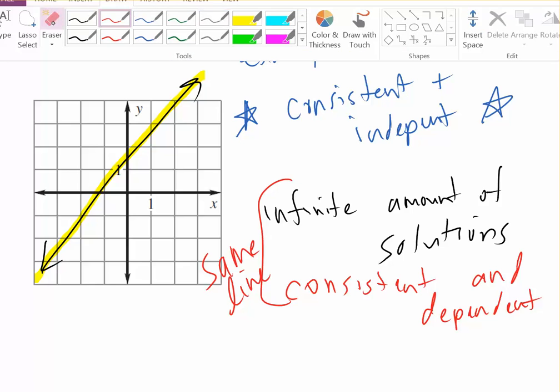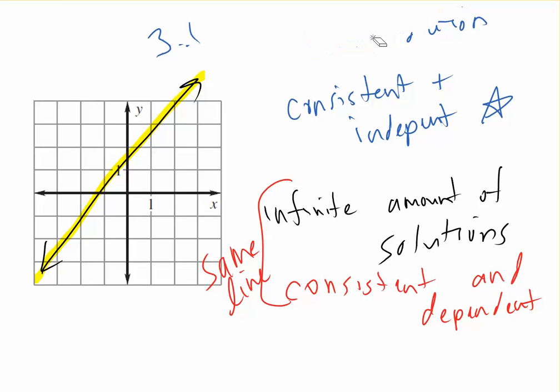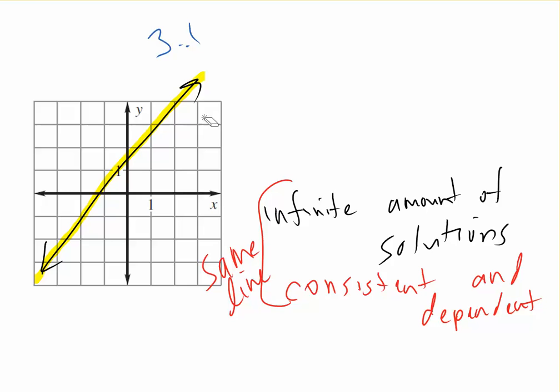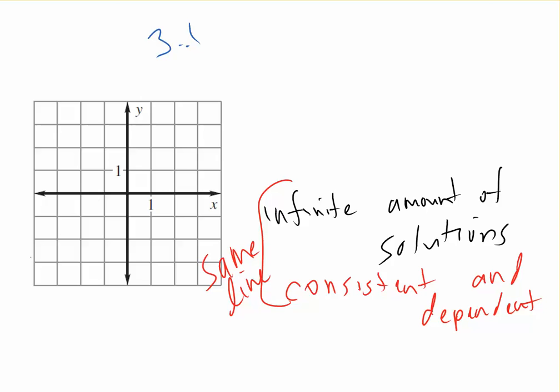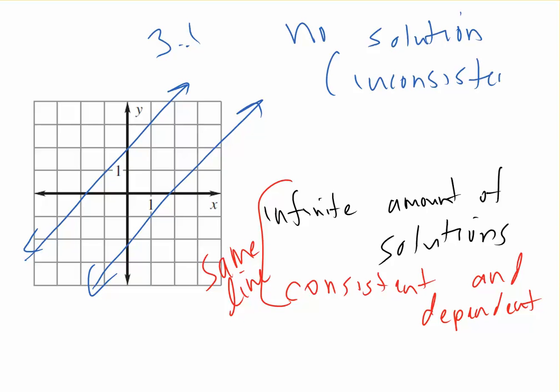The last situation is when you have no solution at all. And you can probably guess when this happens already. There's no solution when the lines are parallel to each other. Because we have one right here. And maybe the other line will be right here. Those lines will never cross. Therefore, there can never be a solution. Because the solution is where the lines touch each other. Whether it's one time or an infinite amount of times. Here, they will never cross. They'll never touch. For this, the third situation is there's no solution. And they are inconsistent. No solution, inconsistent is the vocab you need to know.